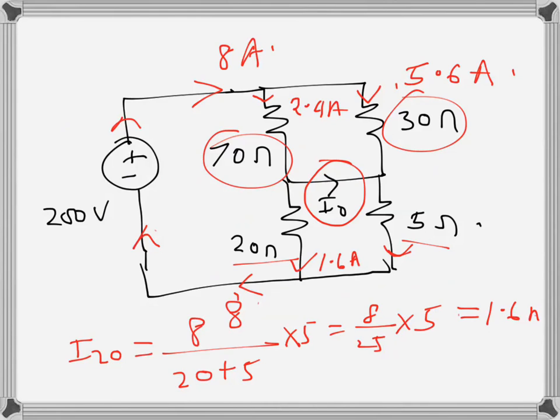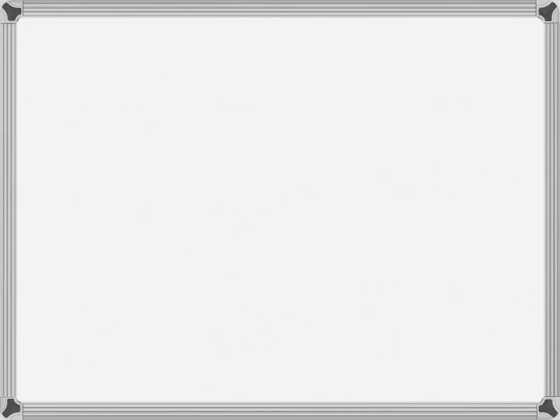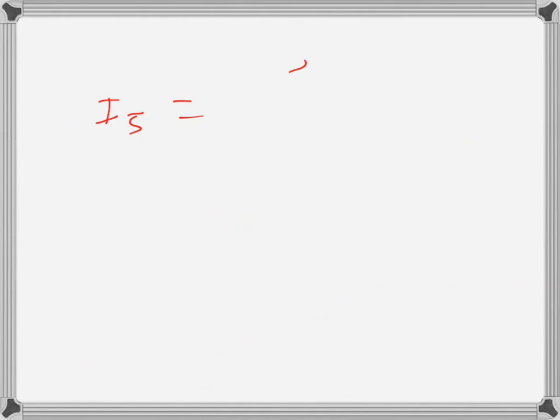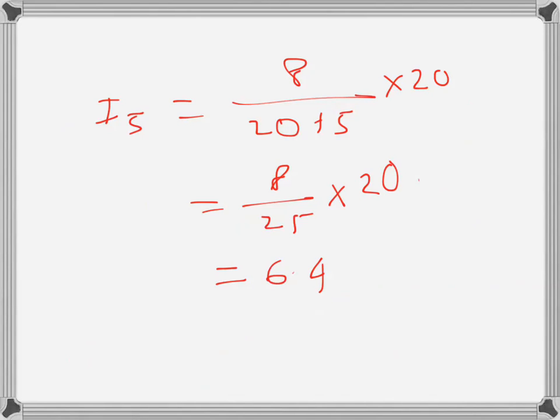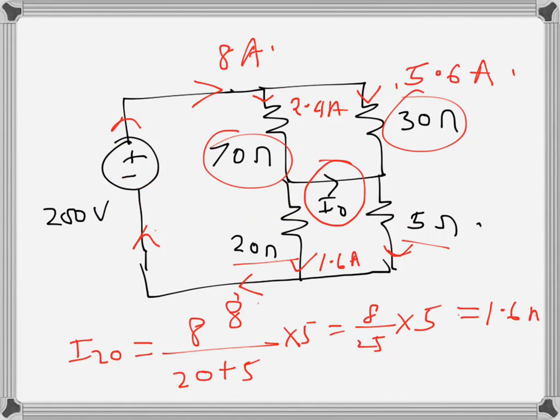I_5 is - the total full current is 8 over 20 plus 5 times 20, so 8 over 25 times 20, and that one is 6.4 amps. So this current now is 6.4 amps. So now we know all the currents.